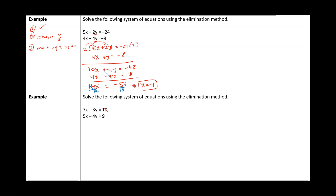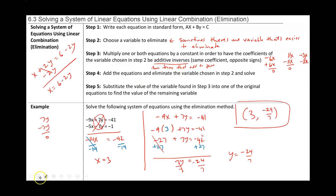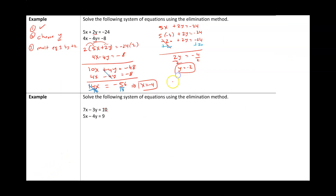I still have to find y. Taking the first original equation, 5x plus 2y equals negative 24, and replacing x with negative 4: 5 times negative 4 is negative 20, plus 2y equals negative 24. Adding 20 to both sides gives 2y equals negative 4, so y equals negative 2. I always write the answer as an ordered pair: x equals negative 4 and y equals negative 2.